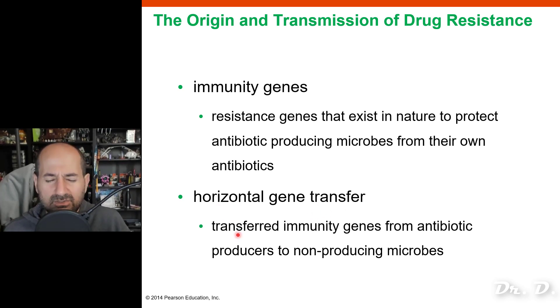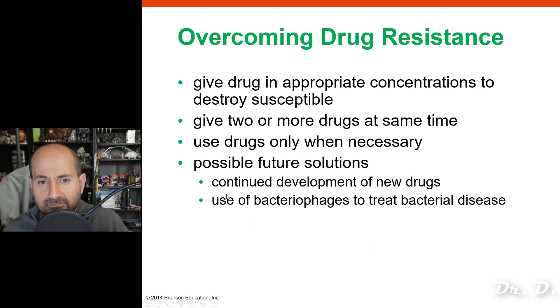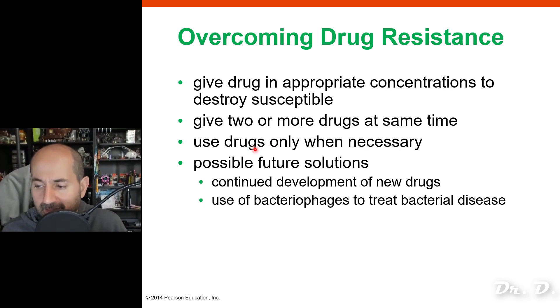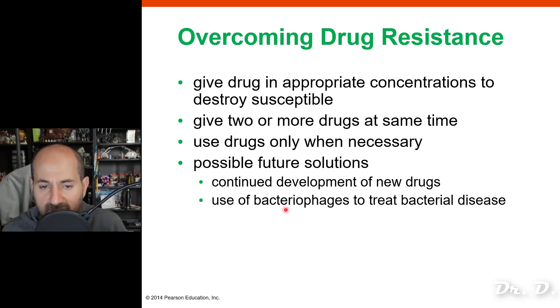Horizontal gene transfer is how microorganisms share information with one another about how to become antibiotic resistant. In the healthcare setting, we try to overcome drug resistance by giving two or more drugs at the same time and only administering drugs when necessary. As a healthcare worker, you should not willy-nilly prescribe antibiotics, because that can cause selection for resistant mutants. New technologies such as bacteriophage — viruses that infect bacteria — and other novel drugs may help against these resistant forms of bacteria.